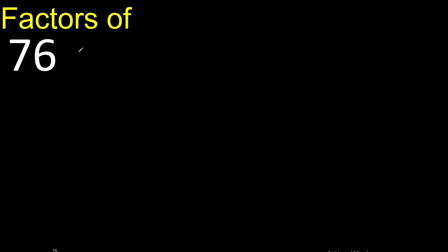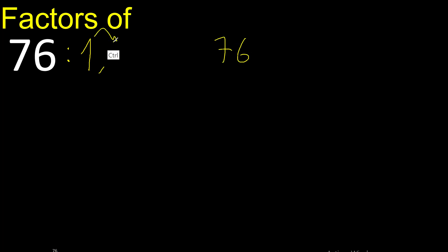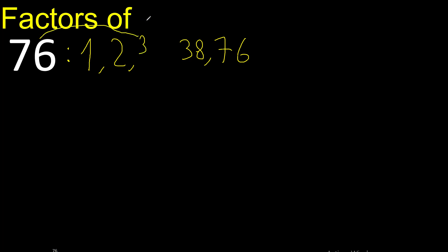Factors of 76. Always start with 1. 76 divided by 1 is 76. Next is 2, divided by 2 is 38. Next is 3, but 76 cannot be divided by 3.